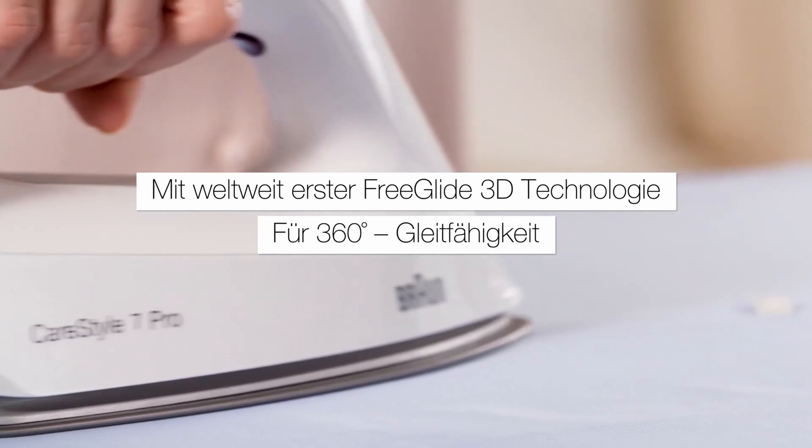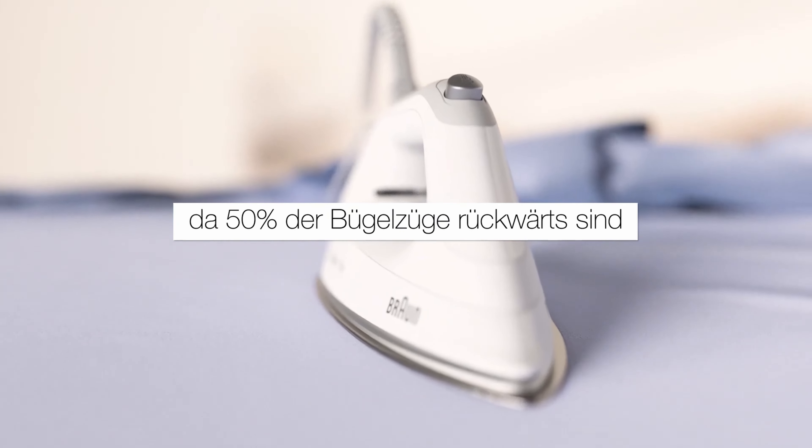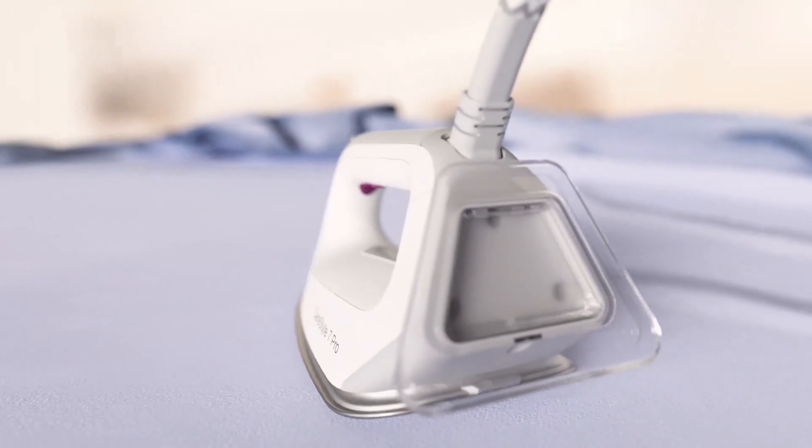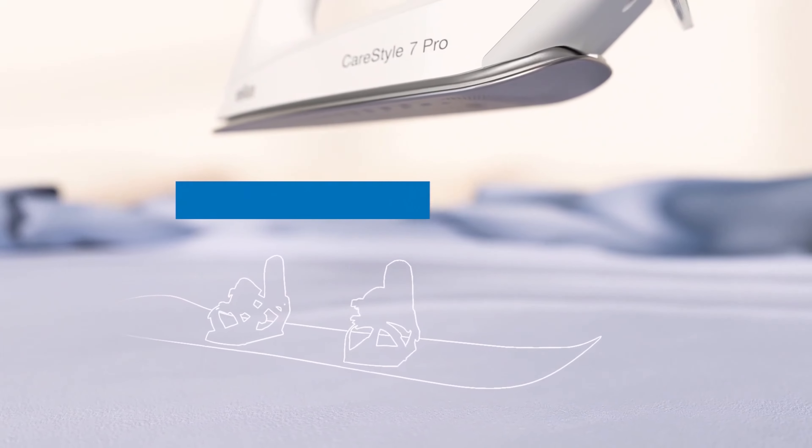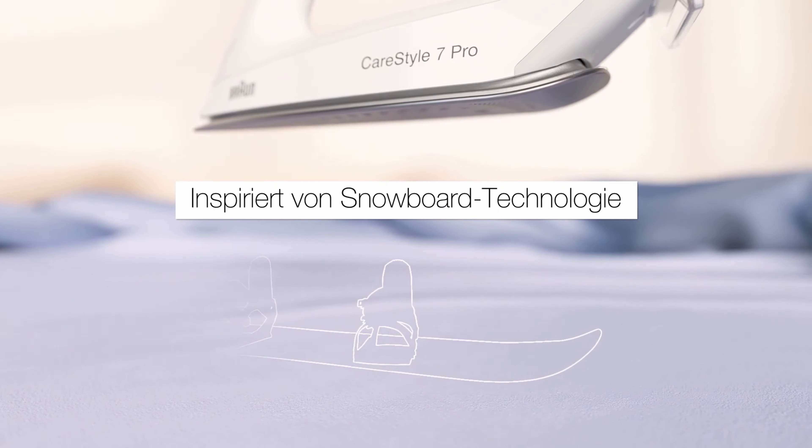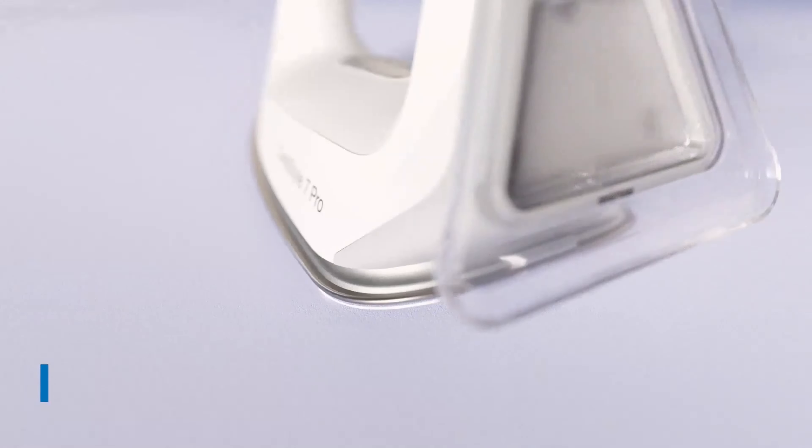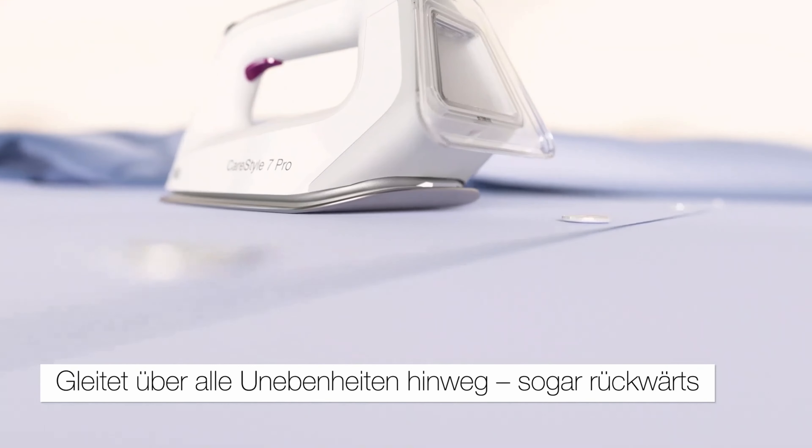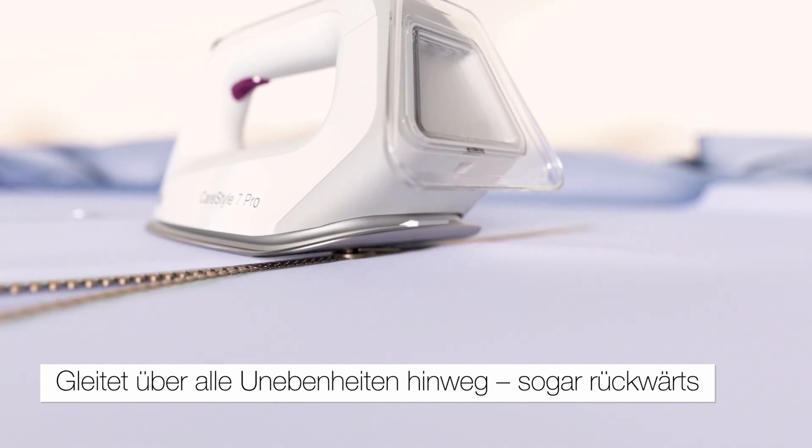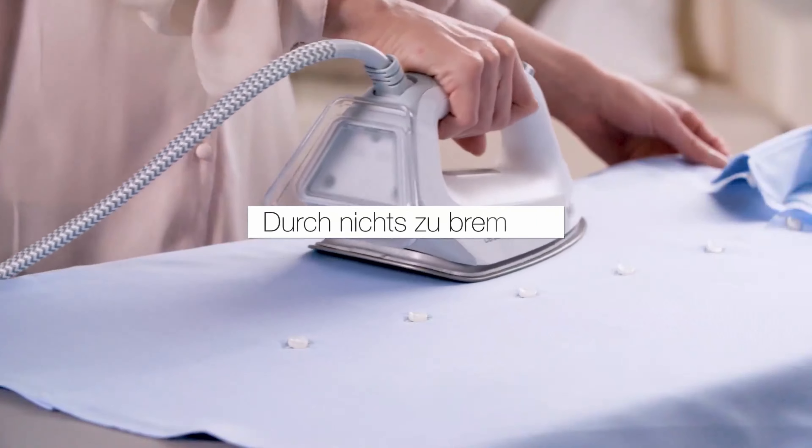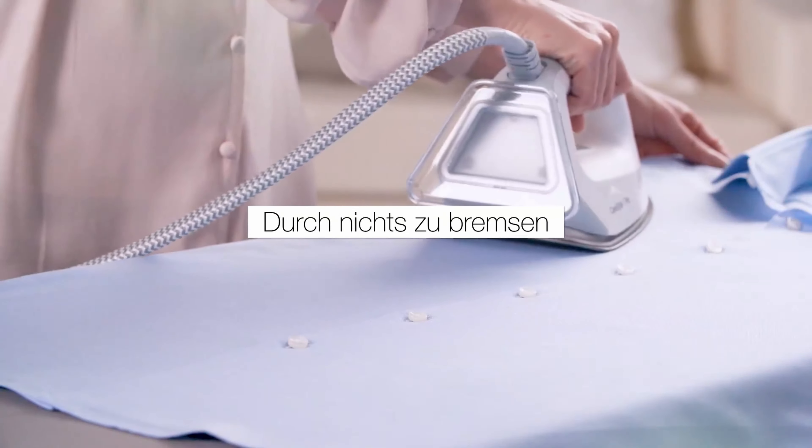In addition to the turbo function for easier ironing of heavy fabrics and stubborn wrinkles, the eco mode is suitable for more delicate fabrics and saves additional energy. Thanks to the silent technology, the device is significantly quieter than its predecessor models. Users report that making phone calls on the side is easily possible.